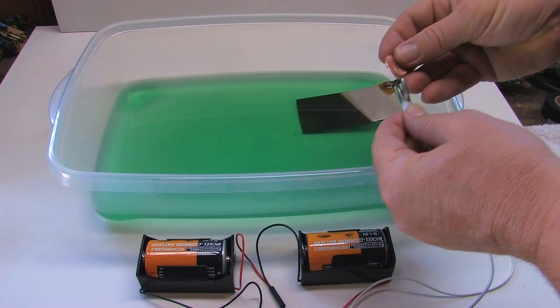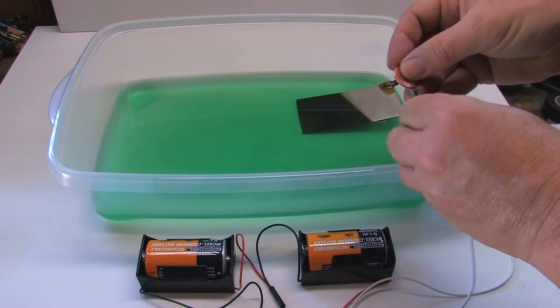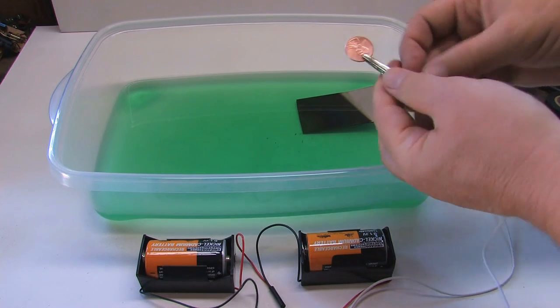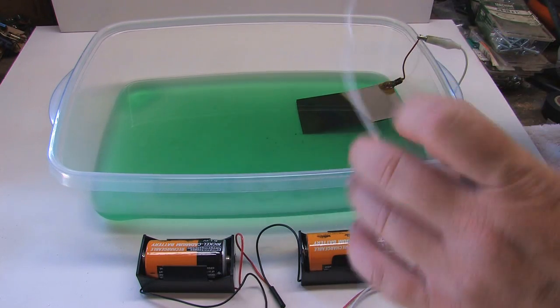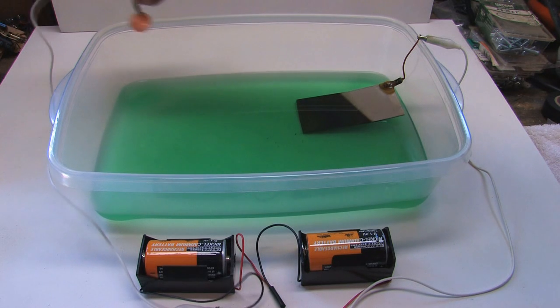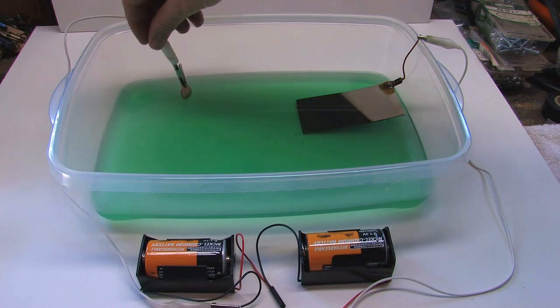I like to test it before I do my actual item. So I'm just going to take a nice shiny penny, and I went ahead and cleaned that penny up. I used a little vinegar when I cleaned it, that works real well with copper. And I'm going to set it into the bath here.